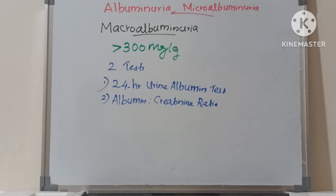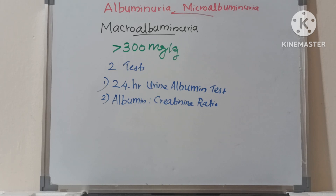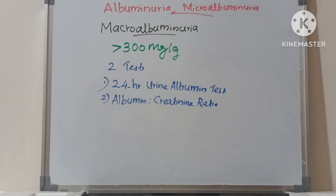The second type of albuminuria is macroalbuminuria, which is when albumin in urine is present in very high amounts — more than 300 mg per gram. Macroalbuminuria can be detected by two tests: the 24-hour urine albumin test, where a value of more than 300 mg per day indicates macroalbuminuria, and the albumin-creatinine ratio, where a result of more than 300 mg per gram also indicates macroalbuminuria.